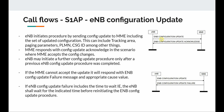The eNodeB initiates the procedure by sending a config update to the MME, including the set of updated configuration. This can include a tracking area, paging parameters, PLMN, and closed subscriber group (CSG) ID, among other things. These are parameters provisioned on the eNodeB that the MME needs to be aware of. The MME responds with a config update acknowledged when it accepts the config changes.